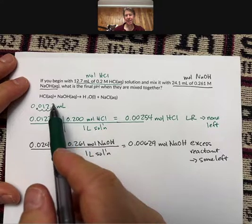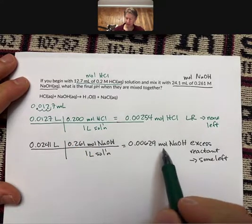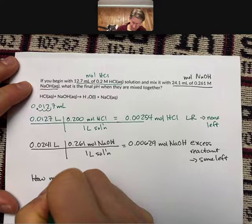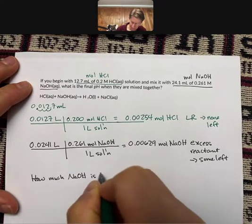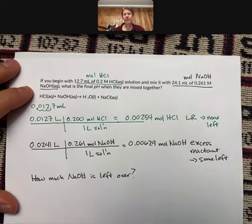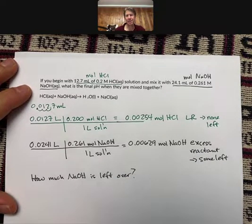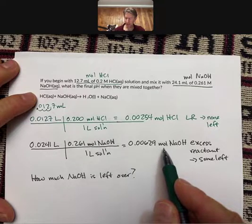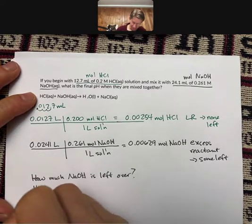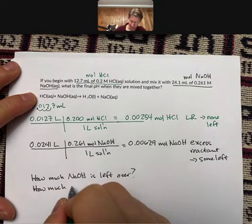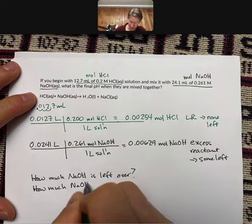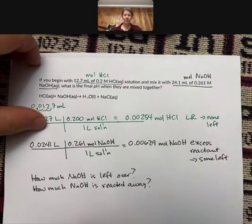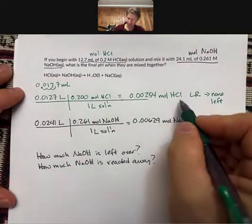Our next step is actually to find how much of the sodium hydroxide is left over. And to do that, we have to find how much sodium hydroxide is reacted away. When we find out how much is reacted away, we can subtract it off the amount that we started with to find how much is left. So really, the next question is how much sodium hydroxide is reacted away.